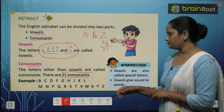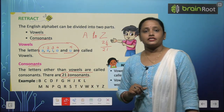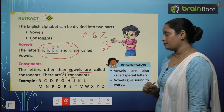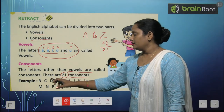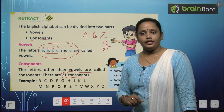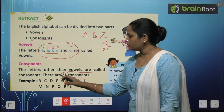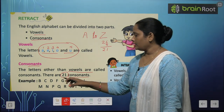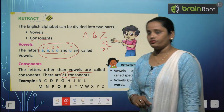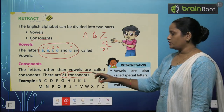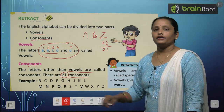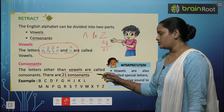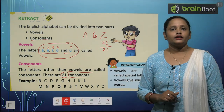Their examples are given here. The consonants are: B, C, D, F, G, H, J, K.